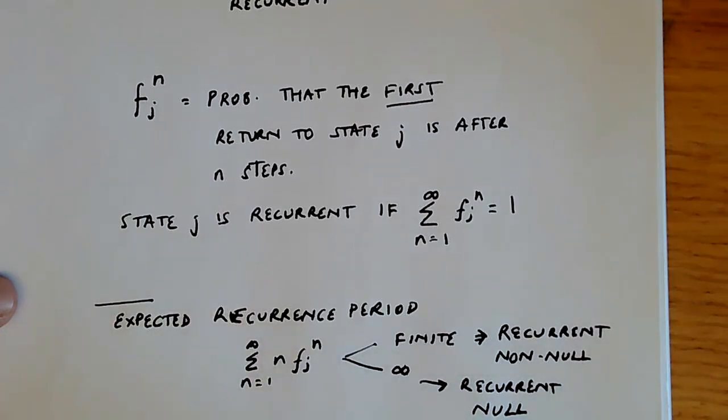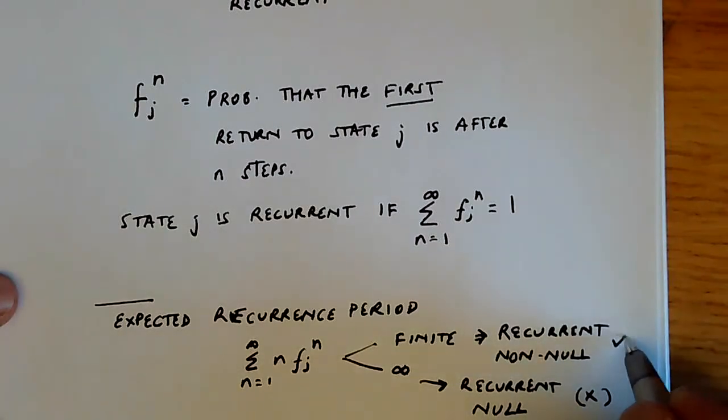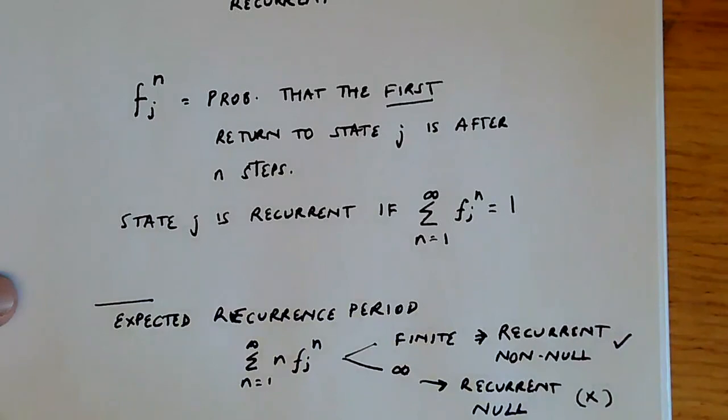So we have a weird chain over here with some divergence. And so basically this is a state that we don't want. We don't want to be in this situation. This is a pathological case. We always would like to be in this situation of having a recurrent non-null. And we'll see why this is the case a bit in the future.